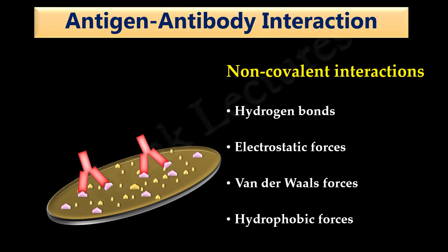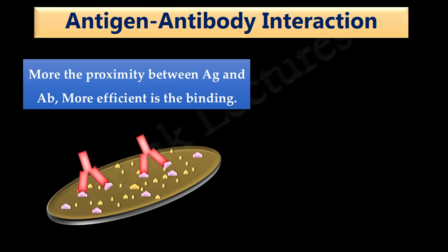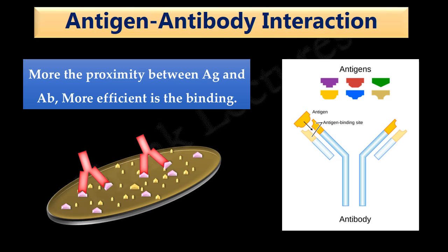Since all these are weak forces, antigen and antibody must come into close proximity, as these weak forces can only occur over a short distance. This binding is dependent on the amino acids and other chemical groups present at the site of contact — the more the proximity of these chemical groups, the more efficient the binding. Binding also depends on the shapes of the epitopes and the antigen binding site; if these fit well into each other, the overall binding is stronger since more bonds are formed.